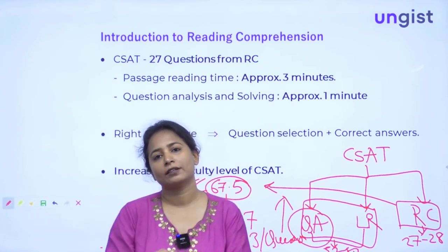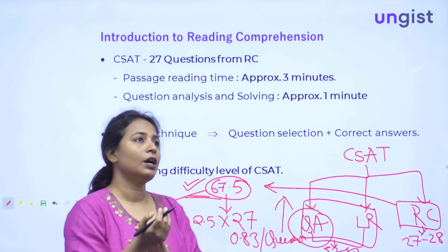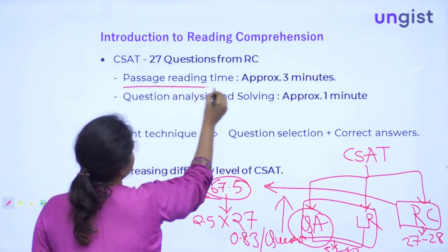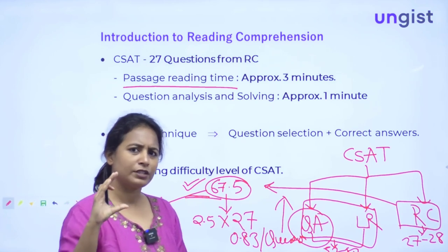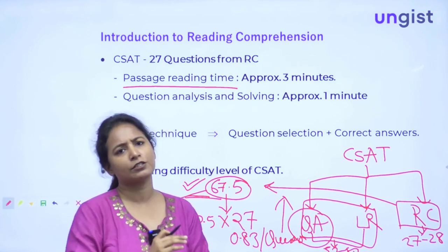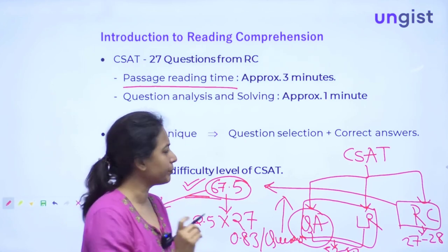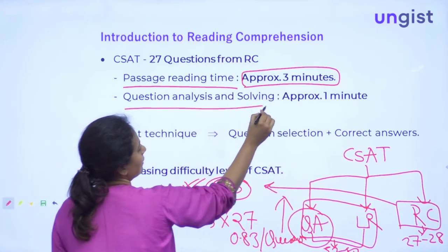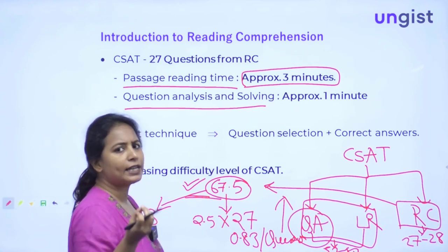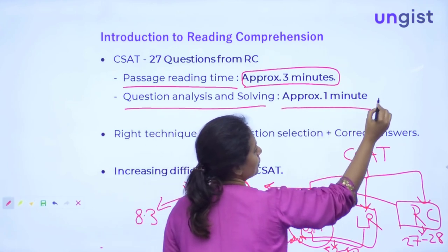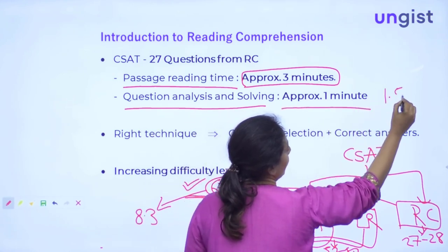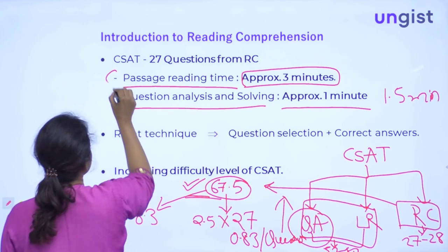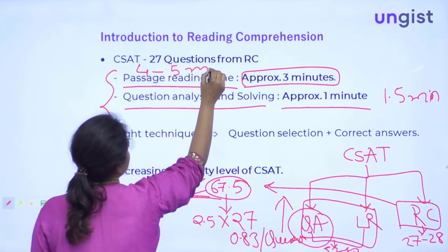Now that you have decided to solve the RC section, I will tell you how much time each question will take. For a small to average-sized passage — not the longer ones with 2 to 3 questions, but a passage with 1 question — it will take you around 3 minutes to read. Processing the passage, jotting down points, and solving the 1 question will take around 1 to 1.5 minutes. So in total, each question takes around 4 to 5 minutes.